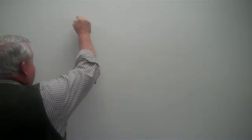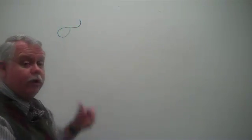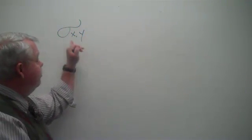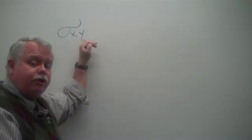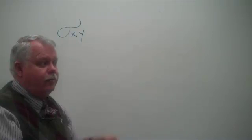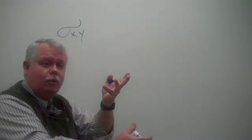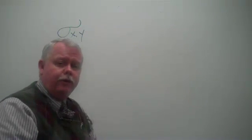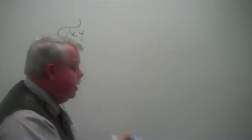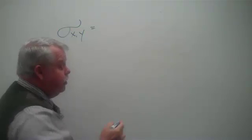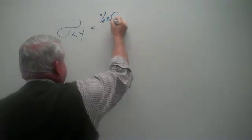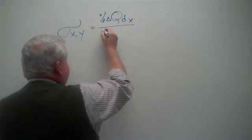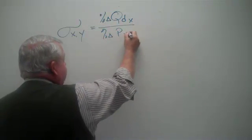The cross price elasticity, I use the small Greek letter sigma, and let's say x comma y. What I'm asking here is what happens to the sales of product x when there's some change in the price of product y? The calculation is the percentage change in the sales or purchases of good x, the first good mentioned here, when there is some percentage change in the price of good y.